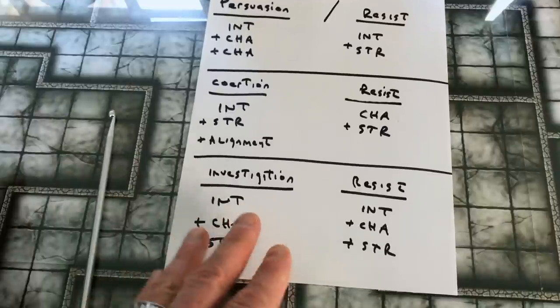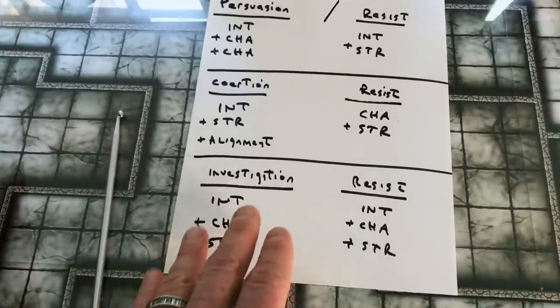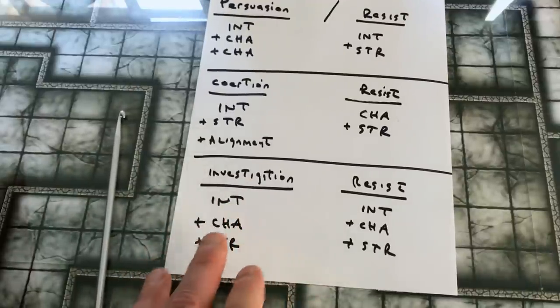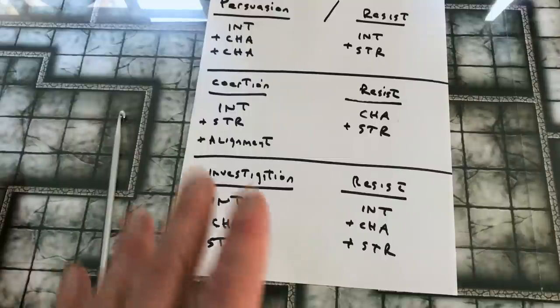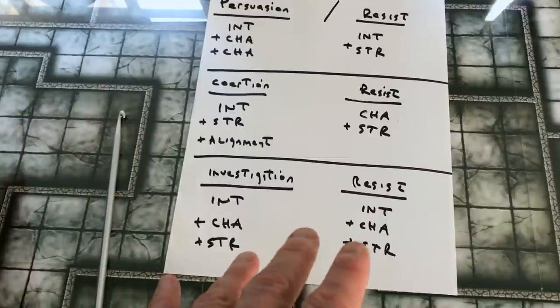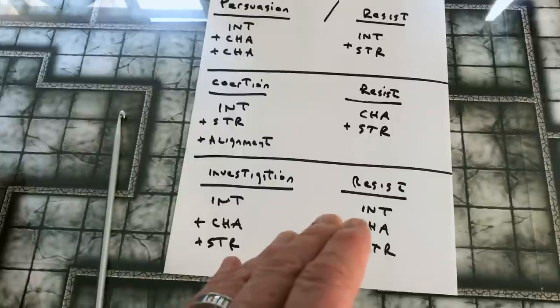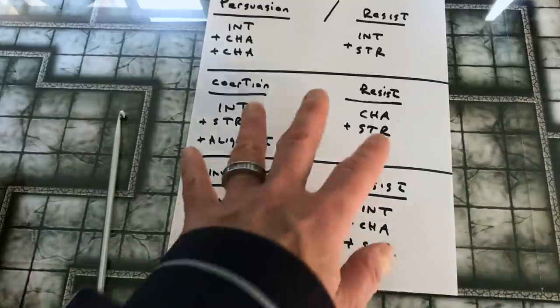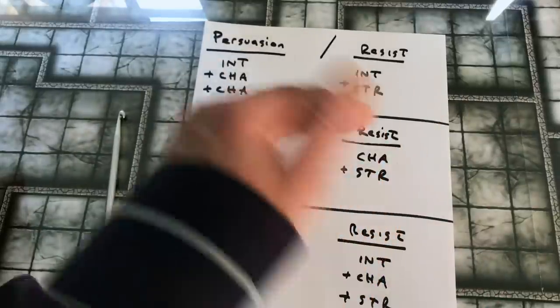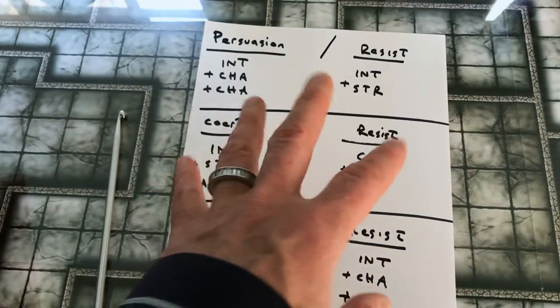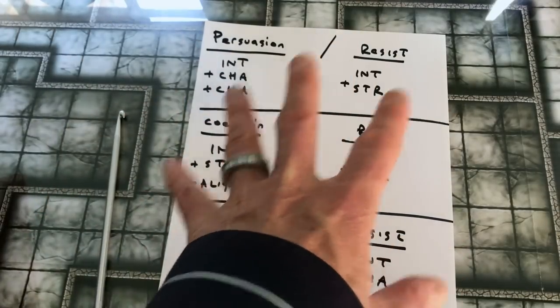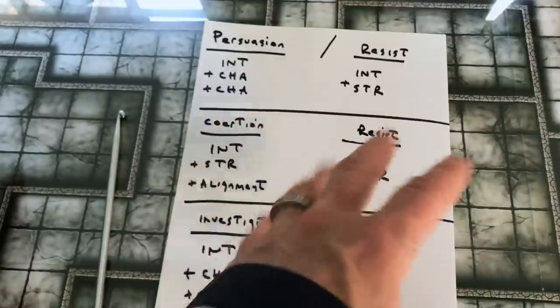Coercion is a combination of intelligence, strength, and in the case of Dallas something called unscrupulousness. Here I'm basing this on the alignment of the characters in D&D to contribute to that value, and obviously the unlawful evil characters are going to have a higher number on this because we're talking about a coercive act. The resistance to that is a combination of charisma and strength.